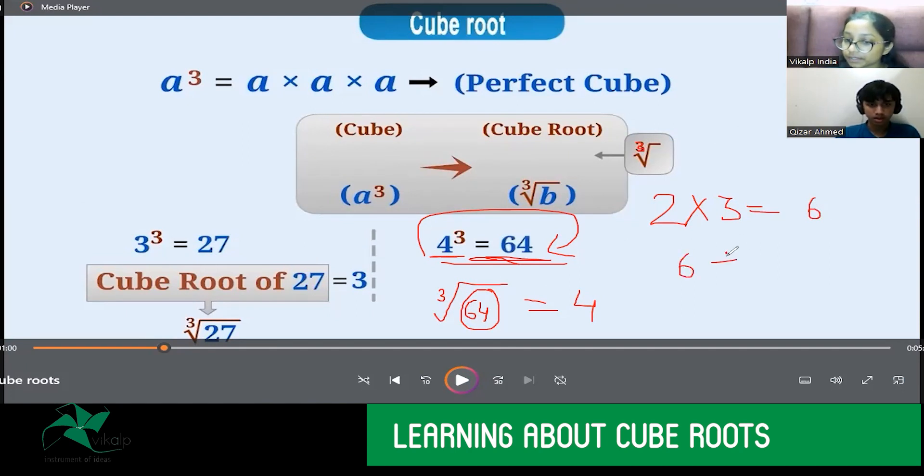Like if I say 2 multiplied by 3 is 6. What will be 6 divided by 2? What will it be? 3? Yes, sir. Right? Similarly, if I say that 4 cube is 64, so the cube root of 64 will be 4. Got it? Yes, ma'am. Alright.